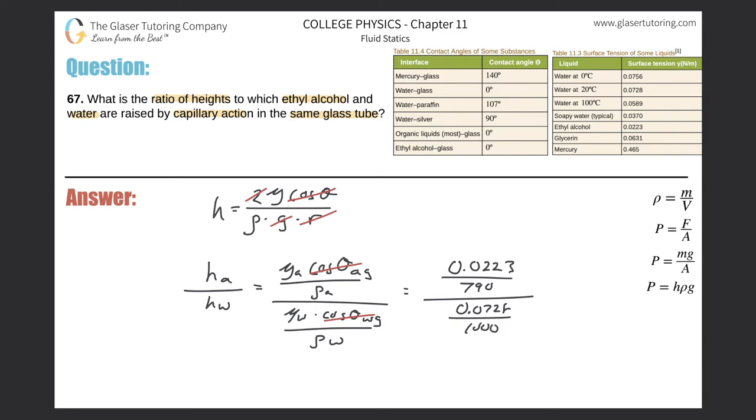Throw this into the calculator. 0.0223 divided by 790, and then that answer divided by 0.0728 divided by 1000, and we have a ratio here now. So the height of the alcohol relative to the height of the water will be equal to 0.388 over 1.